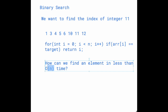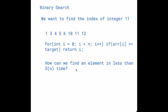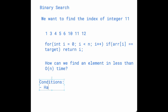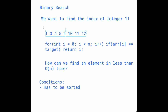We're looking for something faster than O(N), or just iterating through the entire array. That's where binary search comes in. The condition for binary search is simply that the array has to be sorted, and once it's sorted you can just perform the binary search. So how does binary search work?